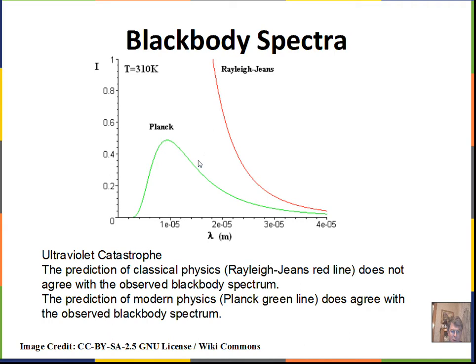When theory doesn't match experiment, you don't stop — you try to find a different theory. Planck was able to come up with an equation that matches the data by assuming there were oscillators in the blackbody with discrete, quantized energy values. Not all energies were allowed for the oscillator. With that assumption, he derived a formula that matched the experiment.